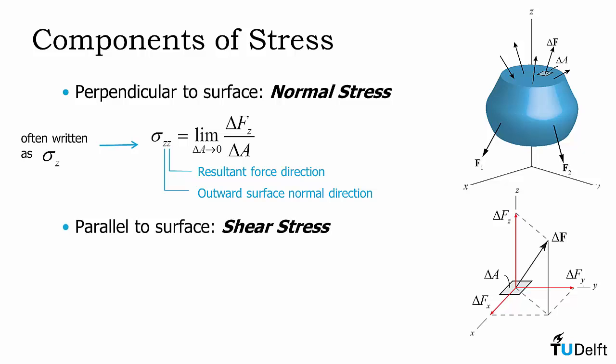Parallel to the surface, we get two stress components, and we will call these shear stresses. The first one we will denote by the Greek letter tau, and it is the resultant shear stress in the x direction. So that is the limit of delta Fx divided by delta A as delta A approaches zero. We use the same subscript notation here. So the first subscript, z, refers to the outward surface normal direction, and the second subscript refers to the resultant force direction, which is in the x direction. Similarly, we get a second shear stress component that the resultant acts in the y direction. We call this tau_zy, and it's the limit of delta Fy over delta A as delta A approaches zero.